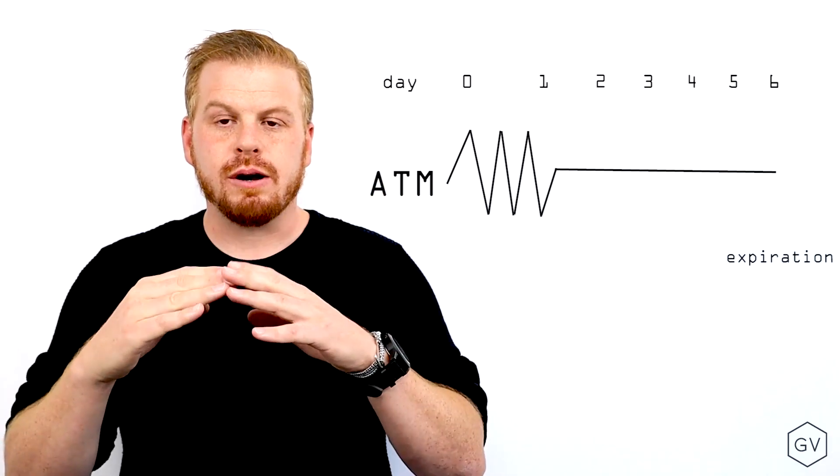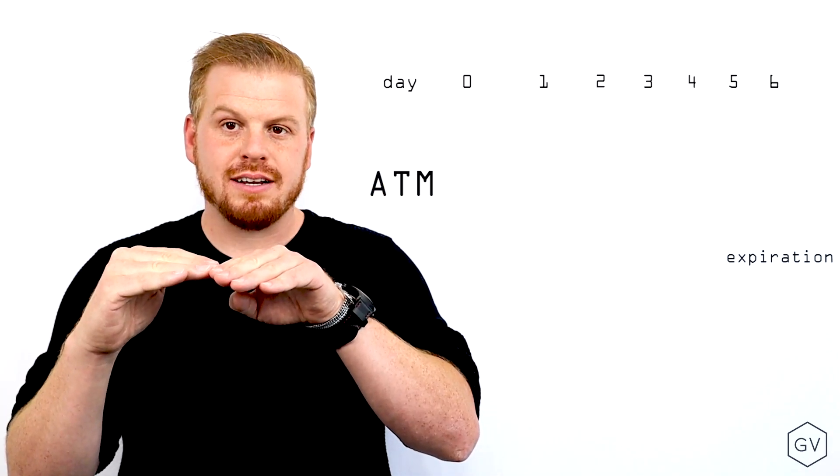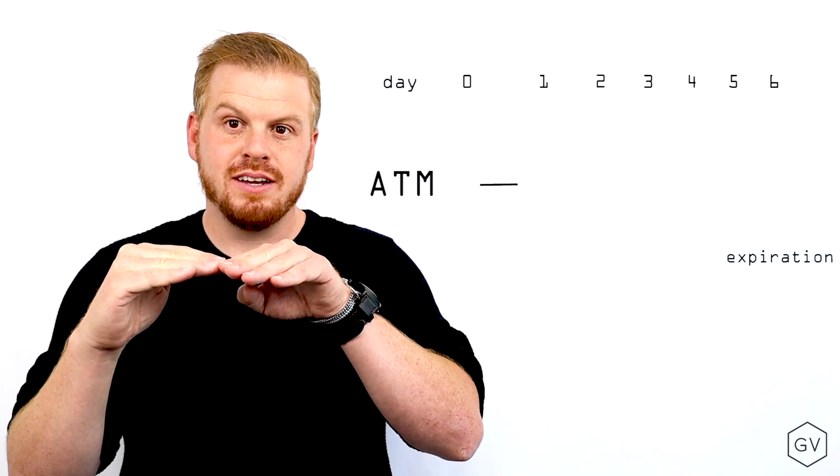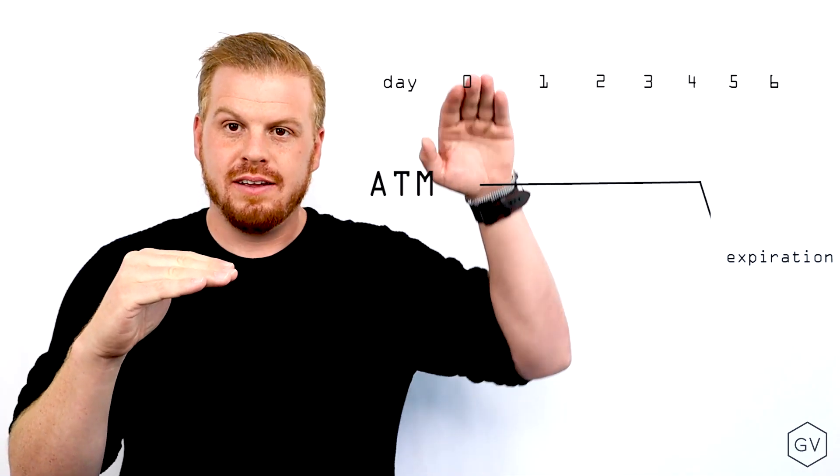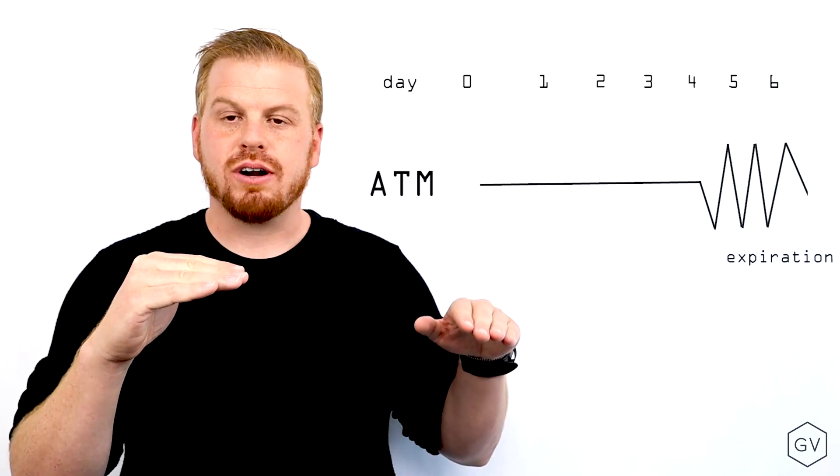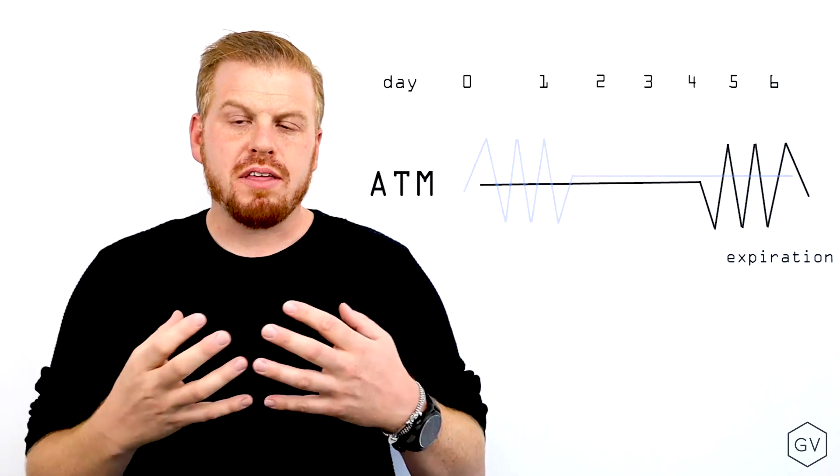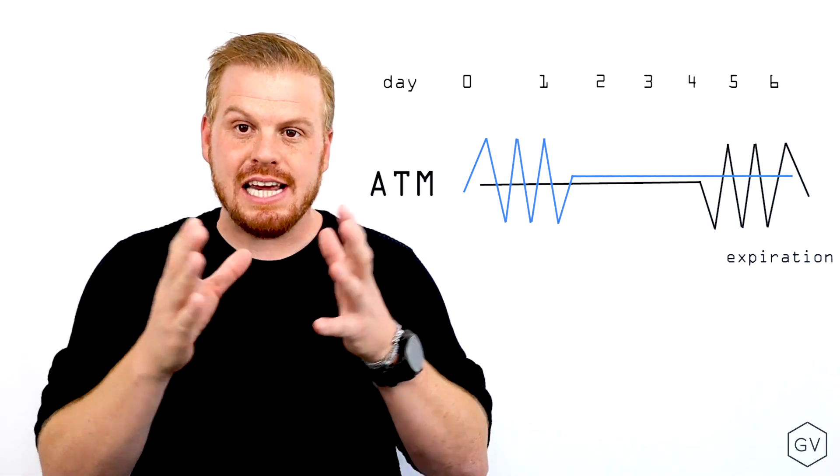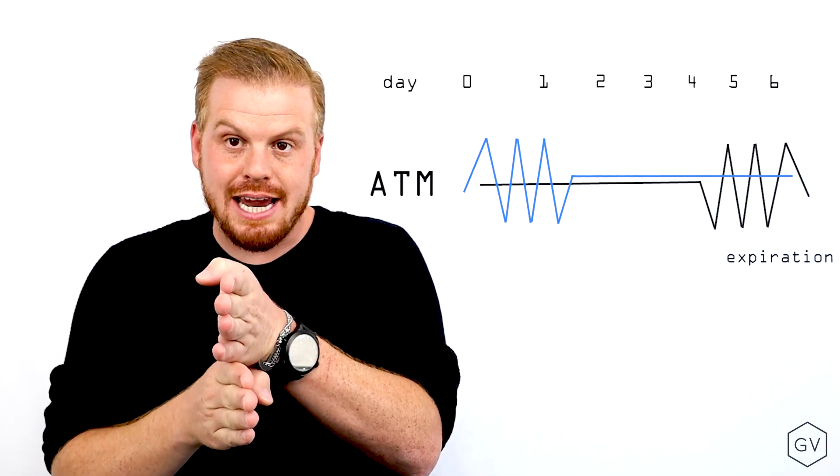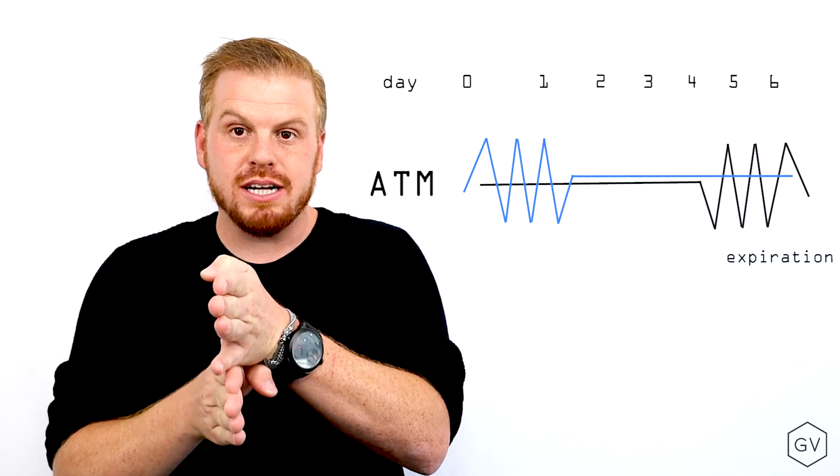and then day 6 through 7 does nothing. And let's look at another scenario where your weekly move contract day 0 through 6 does nothing, and in the last day it scalps 10% around the at the money strike. So both of these contracts had the same scalping time by the same scalping magnitude at the same strike price spot price relationship.